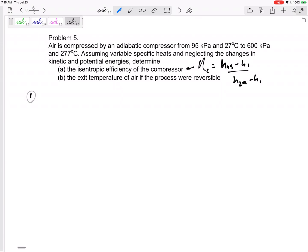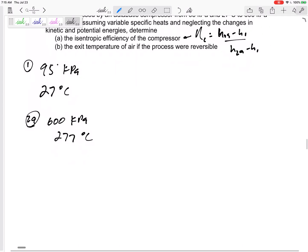What are the properties of state 2 actual and state 2 isentropic? So state 1, it is at 95 kPa, 27°C. It is air, so I can use ideal gas and I can use those property tables from A17. State 2 actual, it is actually at 600 kPa and 277°C.